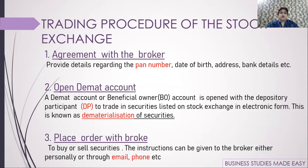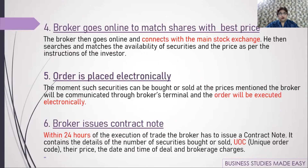Once the DMAT account is opened, you are ready to buy or sell shares. Step 3: Placing an order with the broker — you can call or email him, but he needs proof of your instruction. You must provide your client ID each time. Step 4: The broker goes online via his computer terminal, which is linked to the main terminal of the stock exchange, and checks share availability and pricing.